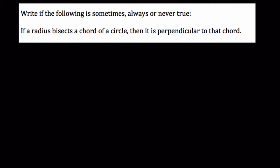We have a statement about circles, and we're asked to identify if it's sometimes, always, or never true. So what is this statement? Well, it says if a radius bisects a chord of a circle, then it is perpendicular to that chord.